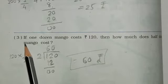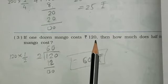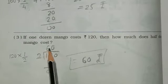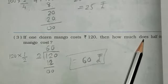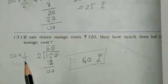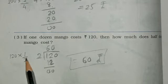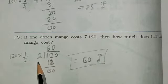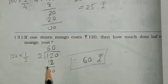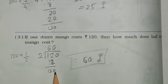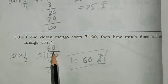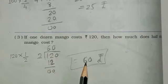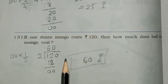Next, third sum. If one dozen mangoes cost Rs.120, then how much does half dozen mangoes cost? One dozen is 120, and half dozen means 1 upon 2. So here write 120 multiplied by 1 upon 2. First of all, division sum: 120 divided by 2 gives 60. And 60 multiplied by 1 is equal to 60 rupees. Answer is 60 rupees. Third sum also completed.